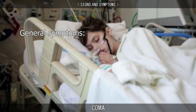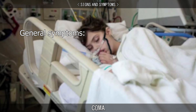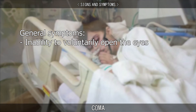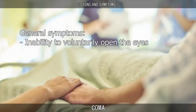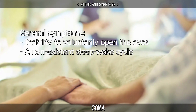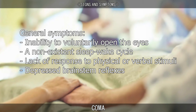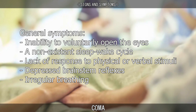General symptoms of a person in a comatose state are inability to voluntarily open the eyes, a non-existent sleep-wake cycle, lack of response to physical or verbal stimuli, depressed brainstem reflexes such as pupils not responding to light, and irregular breathing.